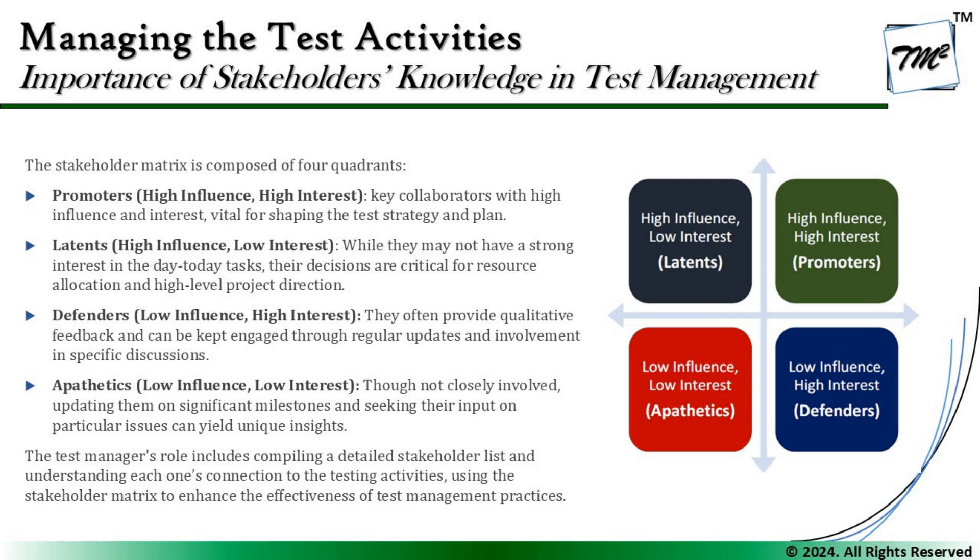The third quadrant is called Defenders — they have low influence but high interest. They often provide qualitative feedback and can be kept engaged through regular updates and involvement in specific discussions. This includes key stakeholders with direct interest in our activities: the development team, service providers like web services, the API team, and the database team. These stakeholders have direct interest in what we do because any test case failures will involve them directly in sorting out issues.